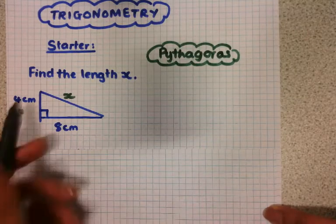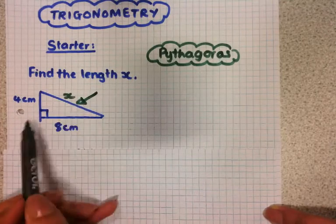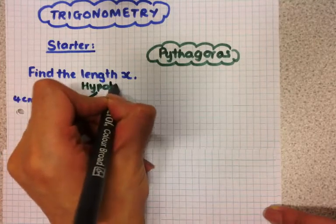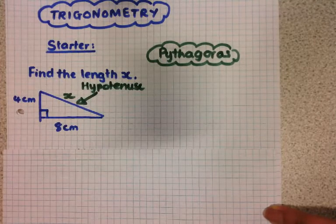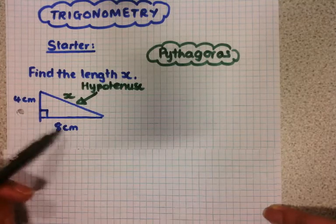So we're looking for the hypotenuse length and the hypotenuse is always opposite the right angle. And when we're looking for a hypotenuse, we have to add the other two sides together squared and then square root.